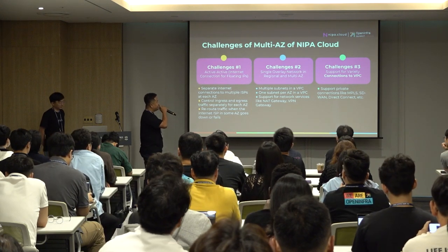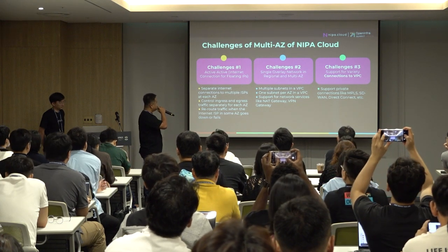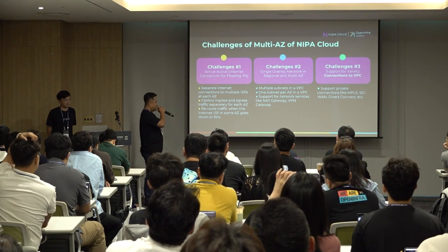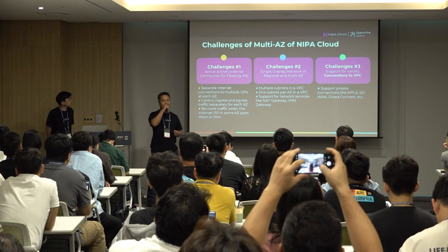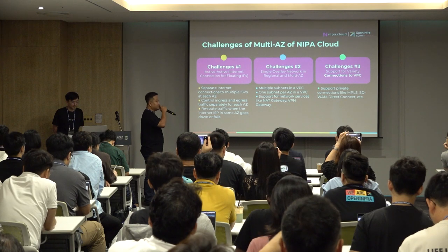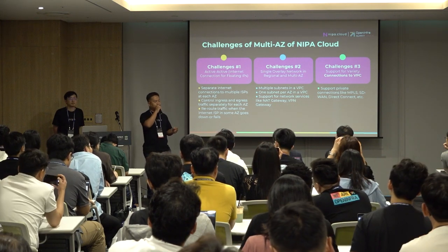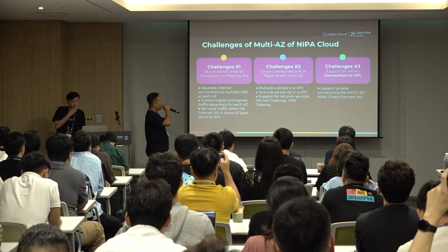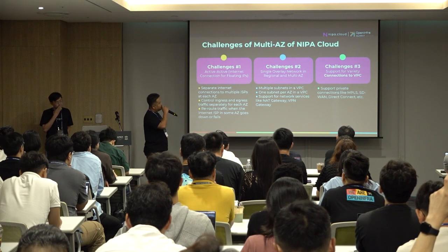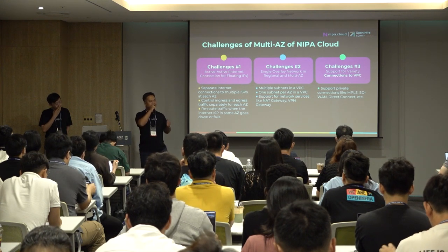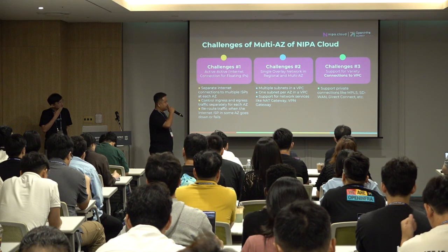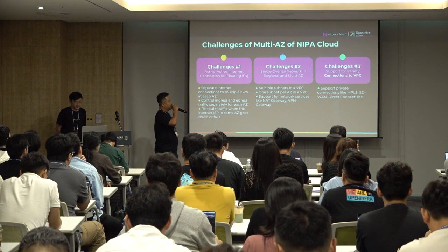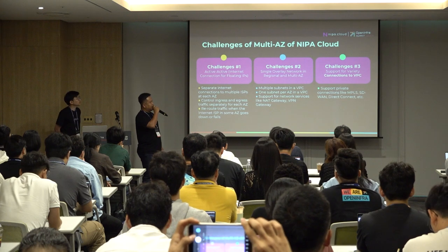The challenges for our multi-AZ NIPA Cloud setup are: first, we need to separate the internet connection to support multiple ISPs per AZ and control the ingress and egress traffic. We also need failover when an AZ goes down — automatically re-routing to another AZ. Challenge two is having a single overlay network across multiple AZs, similar to AWS where users can have a subnet spanning AZs. Challenge three is supporting connectivity types like MPLS, L2/L3 VPN, and direct connect.